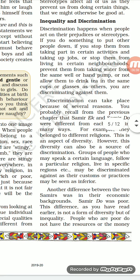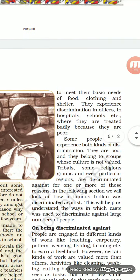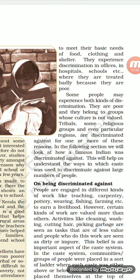The example from the last paragraph shows another difference between the two Samirs was in their economic background. When we talk about discrimination and equality, we always judge people on the basis of their economic strength — thinking that rich people are good and have all the skills, while we ignore poor people who may actually be more capable. Discrimination is happening in every corner of society because people don't believe in giving equal respect.